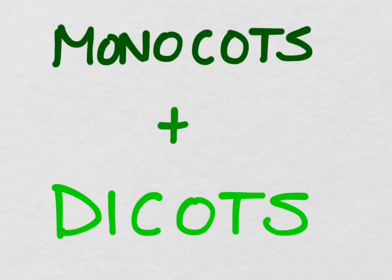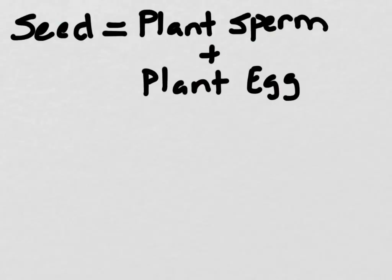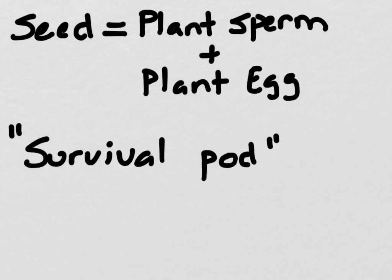The way that we're going to do this is to discuss the seed. A seed is the result of a plant sperm and a plant egg uniting to fertilize the ovule. Essentially, a seed is a protective coat surrounding a survival pod for the plant. This will enable it to have all the nutrients that it needs while it begins to grow.